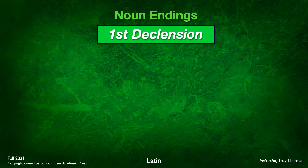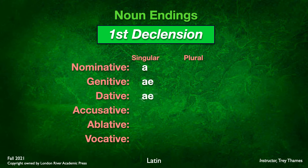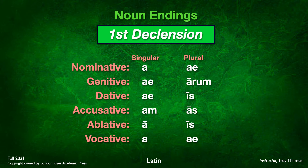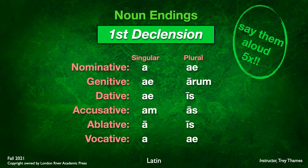Let's check out first declension noun endings. Several of these have a long mark or macron over them. If you remember from the introductory chapter on pronunciation, the macron simply means you hold that sound out twice as long as the short vowel. So the endings would sound like: a, ae, ae, am, a, a, ae, arum, is, as, is, ae.